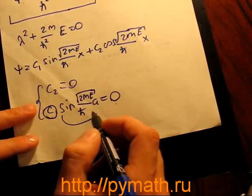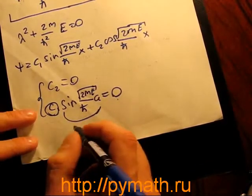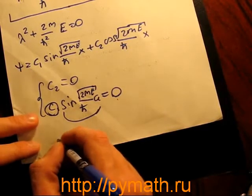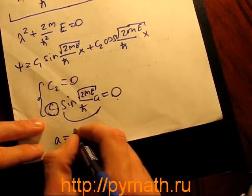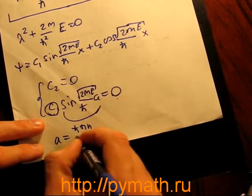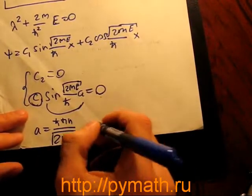That's why you will find that this sine function must equal 0, and from this you will find that a = πn√(2mE)/ℏ, and from this condition we can find the resulting spectra of the system.